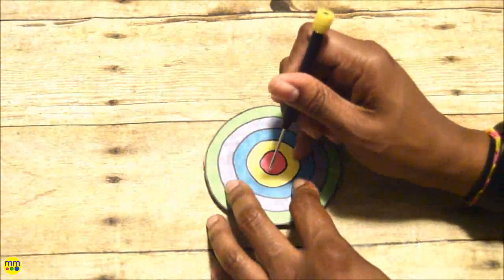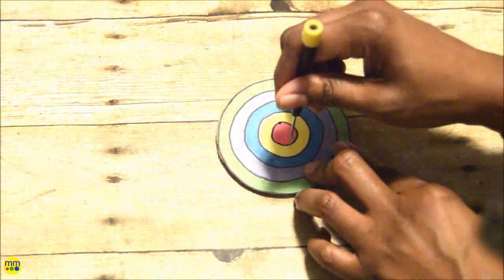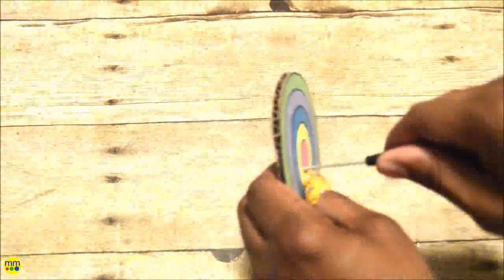Poke two small holes in the center of the spinner and thread some string, and tie a knot at one end.